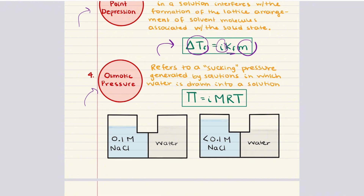Finally, we have osmotic pressure. This is the pressure required to prevent the flow of solvent molecules through a semi-permeable membrane from a region of lower solute concentration to a region of higher solute concentration. Osmosis occurs because solvent molecules naturally move to equalize solute concentrations on both sides of the membrane. The osmotic pressure of a solution can be calculated using: pi equals i times M times R times T, where M is molarity, R is the gas constant, T is temperature, and i is the van't Hoff factor. Osmotic pressure is particularly important in biological systems because it helps regulate the flow of water and nutrients in and out of the cell.